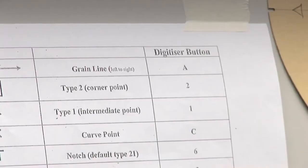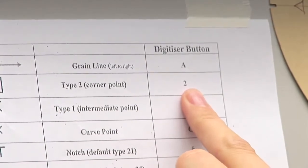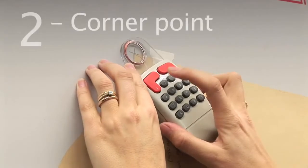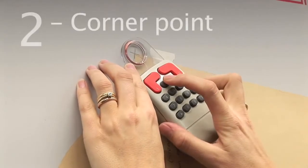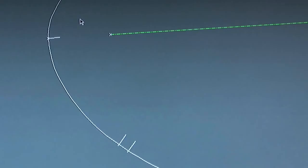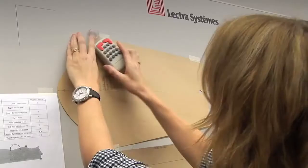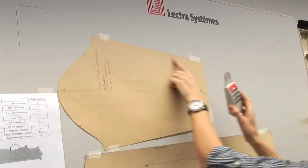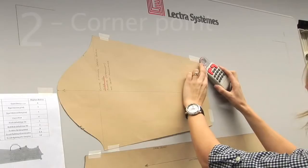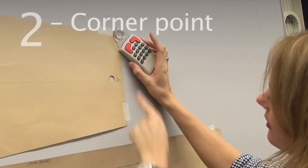At the top of the curve is a corner point, and the correct button for this is button 2. Take this moment to look at your screen — you should now clearly see your work. If the next element appears to be a straight line, then you can move to the following corner point and mark it with button 2.